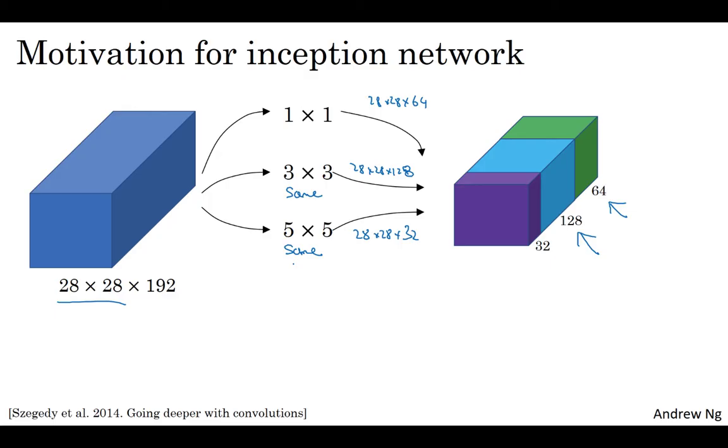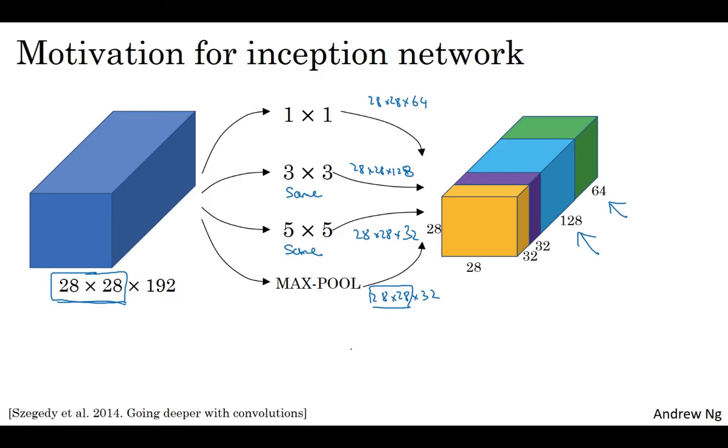Maybe you don't want a convolutional layer. Let's apply pooling, and that has some other output, and let's stack that up as well. Pooling outputs 28 by 28 by 32. Now, in order to make all the dimensions match, you actually need to use padding for max pooling. This is an unusual form of pooling, because if you want the input and output to both be 28 by 28, then you need to use same padding as well as a stride of 1 for pooling.